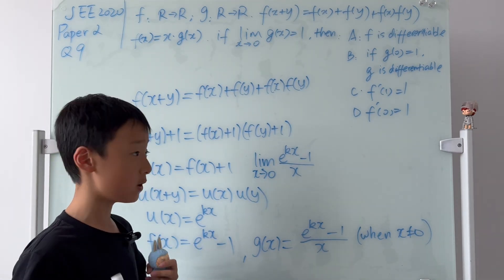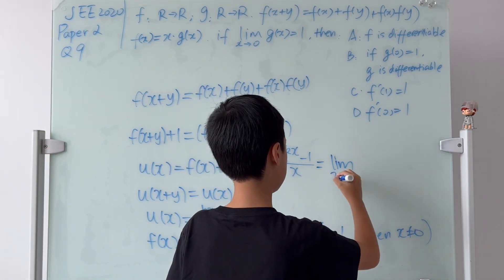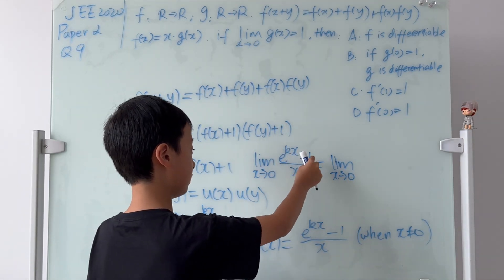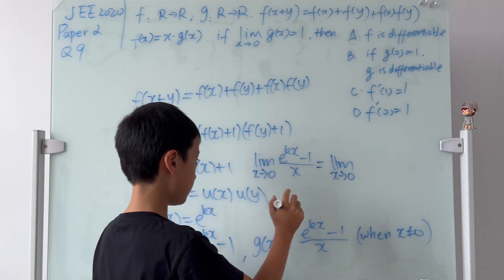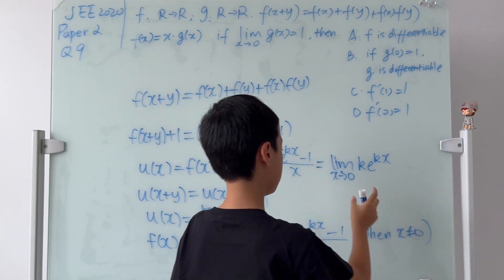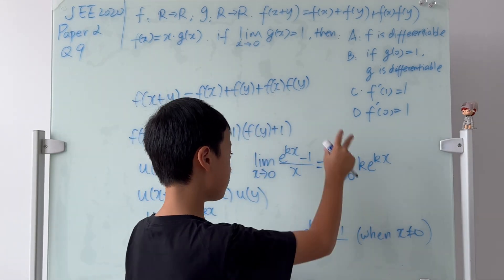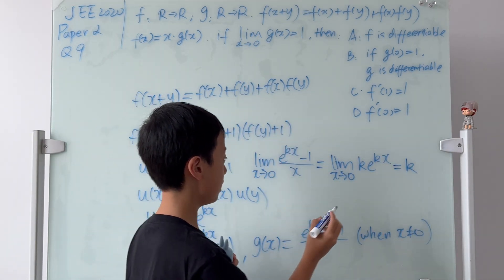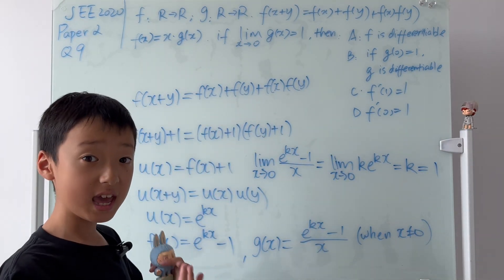So in this case, we can use L'Hôpital's rule. So it's equal to the limit as x goes to 0. The denominator becomes 1. The derivative of negative 1 is 0. And the derivative of this is just k times e^(kx). And here, we can just plug in x equals 0. So the limit will become k. And we know that this limit is also equal to 1. So we know that k is equal to 1.